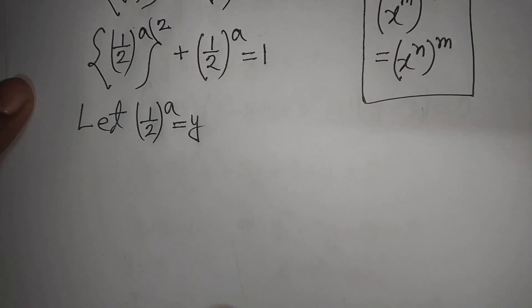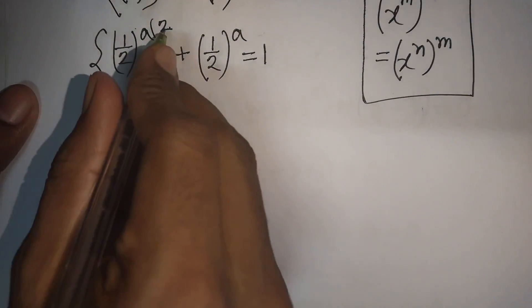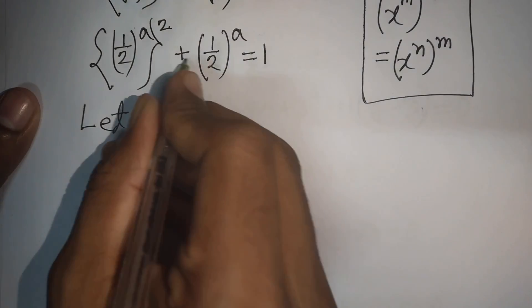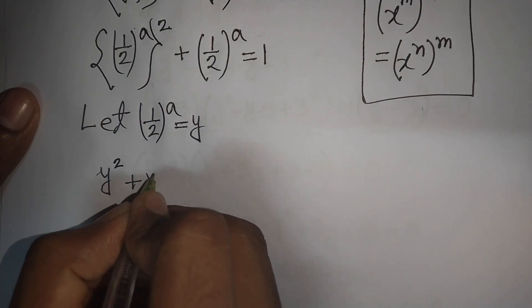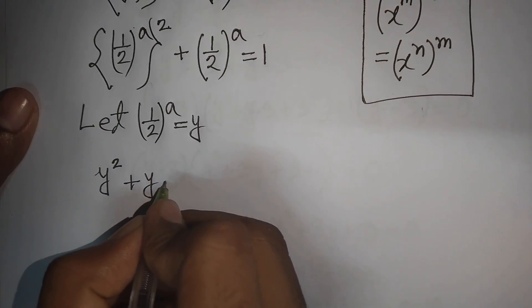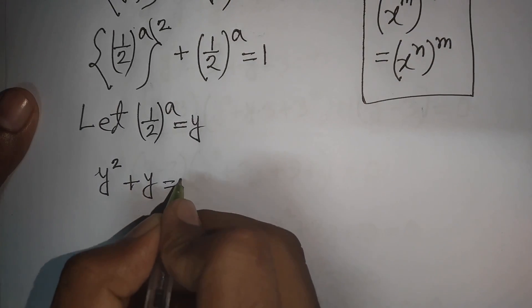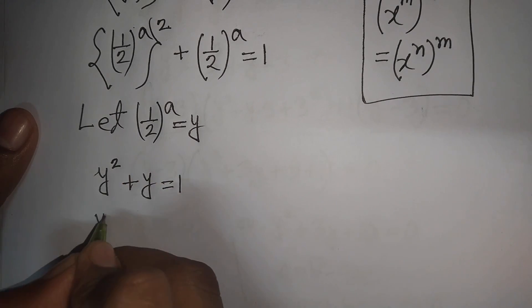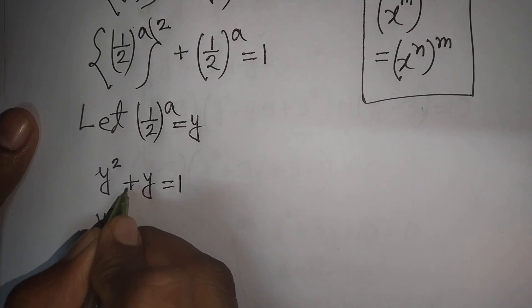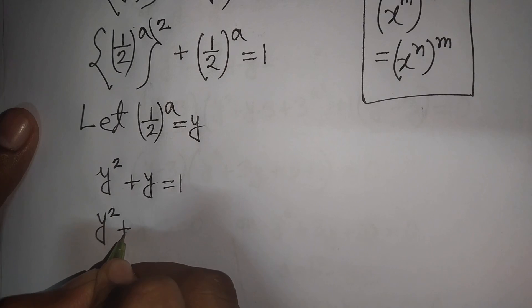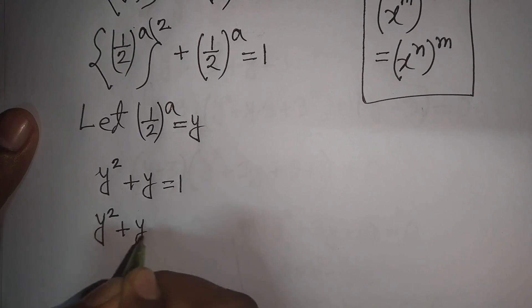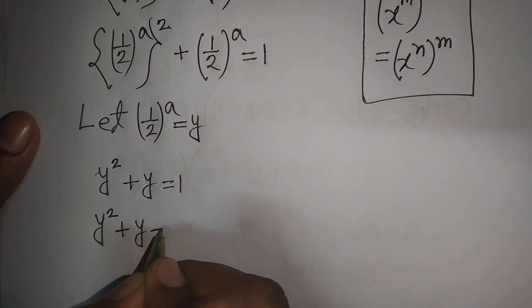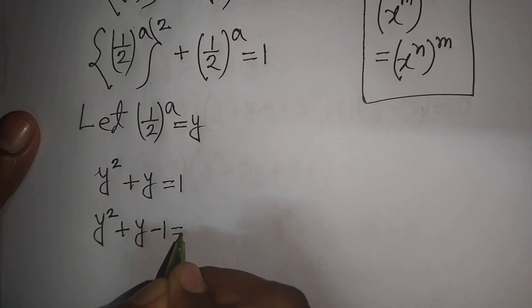Both terms have (1/2) to the power a. So let (1/2) to the power a be substituted by y. Our equation will become y squared plus y equals 1.